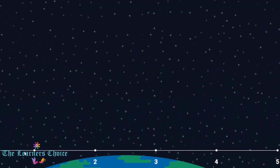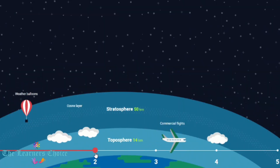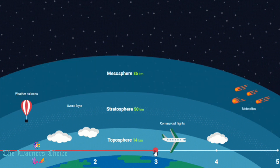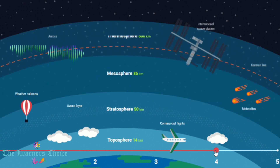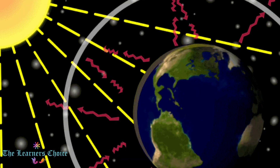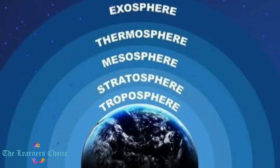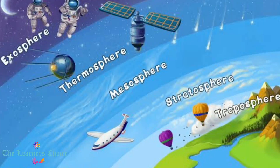Extending from the Earth's surface to outer space, these layers are known as troposphere, stratosphere, mesosphere, thermosphere, and exosphere respectively. These five different layers provide protection and also make life possible on Earth. In this video, we will discuss more about these layers individually.